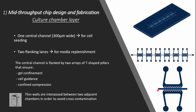Each chamber has three different channels: the central one where cells are seeded with hydrogel, and two flanking lanes for media replenishment. The peculiar characteristic of this cartilage-on-chip device is that it also features two arrays of pillars, which are important for gel confinement, cell guidance, and exerting confined compression — the final aim of the work.